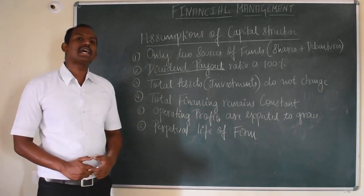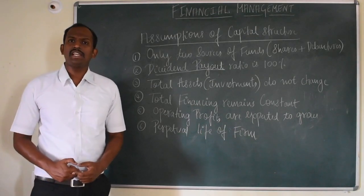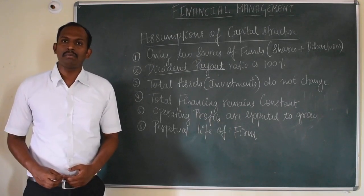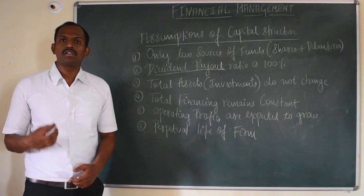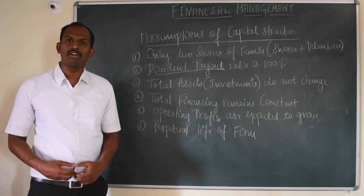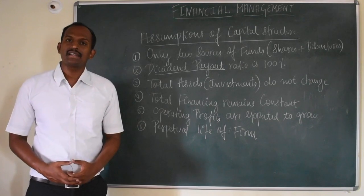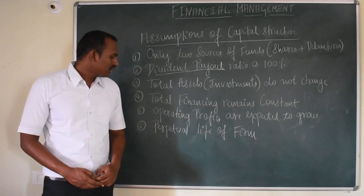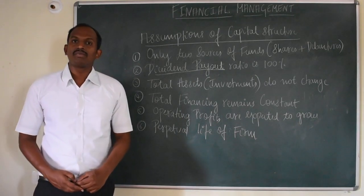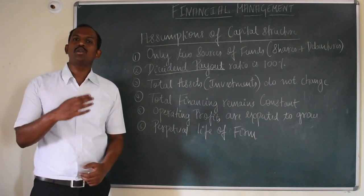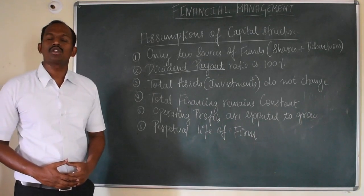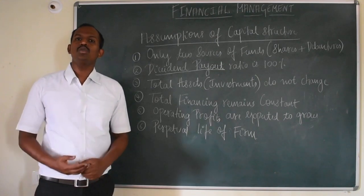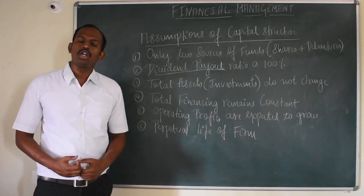The fifth assumption is that operating profits are expected to grow. Due to changes in the proportions of debt and equity, it has an impact on operating profits, and the company always seeks to maximize operating profits. The sixth assumption is perpetual life of the firm — the company is expected to exist for the long term, similar to a joint stock company. It will neither liquidate nor wind up, but continues to exist for a longer duration.